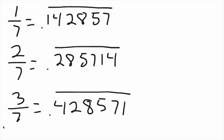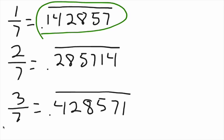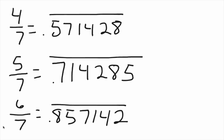Now the 7s. If you memorize 0.142857, you know the 7s, because these numbers simply repeat and rotate. 1 over 7 is 0.142857, 2 over 7 is 0.2857, 3 over 7 is 0.42, 4 over 7 is 0.5714, 5 over 7 is 0.714285, and 6 over 7 is 0.857142. The beginning just shifts each time.